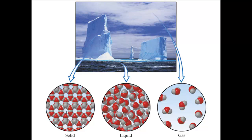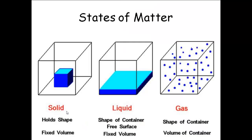Just to review: a solid has a fixed shape and a fixed volume. A liquid has a fixed volume but can assume the shape of its container. And a gas has neither a fixed volume nor a fixed shape.